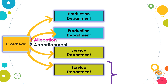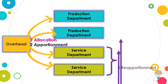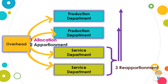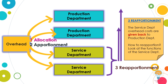The next process is to reapportion the overhead cost of the service cost centers to the production cost centers. The reason for this reapportionment is that cost units are not produced in the service cost centers, and so it will not be possible for the cost units to absorb the overhead costs of the service cost centers unless and until such have been reapportioned to the production cost centers.